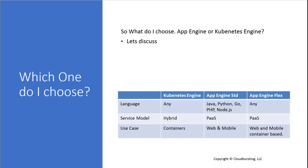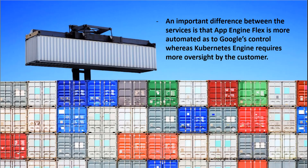There's definitely a lot more to talk about with App Engine and Kubernetes Engine, but from a development perspective, this gives you some ideas to consider when deciding what's right for your environment. To wrap up: App Engine Flex is certainly more automated than GKE. If you want to use GKE, you get better flexibility and potential cost savings, but you'll be doing more work as well.